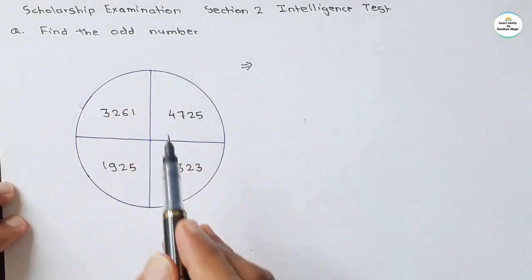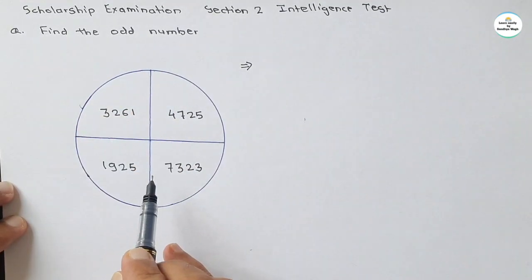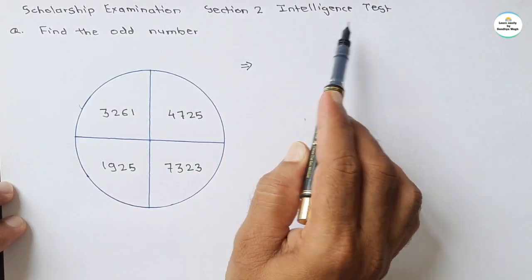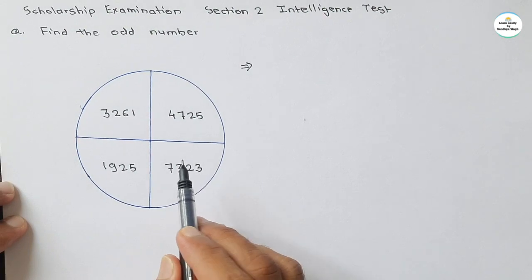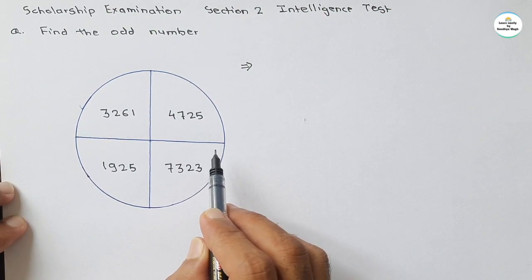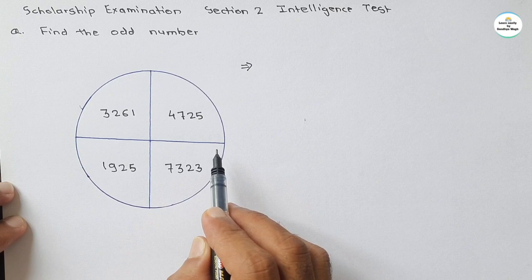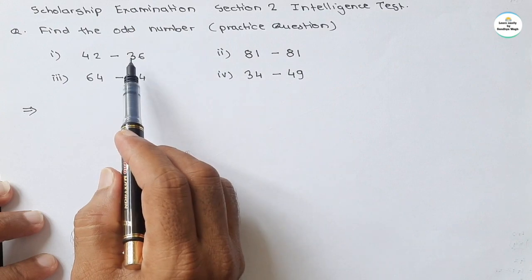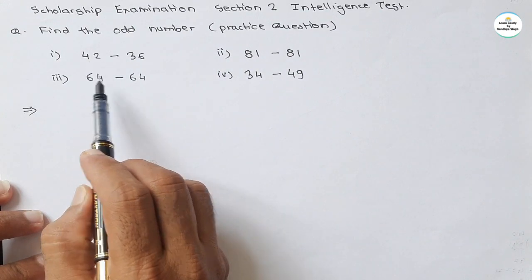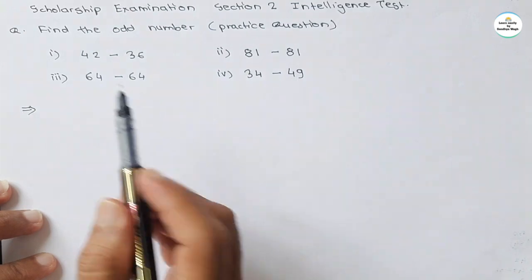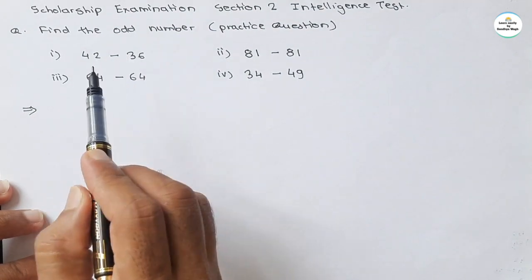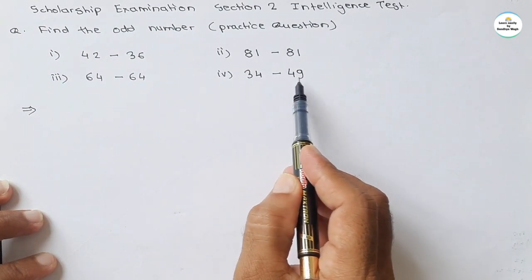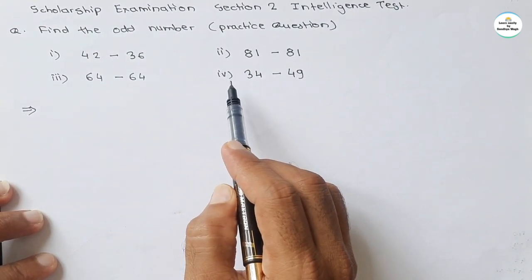See the question: find the odd number. Four numbers are given in a circle and one number is odd. This question is under scholarship examination, section 2, intelligent test. Before starting the solution of this question, let's see the solution of the practice question given in the previous video. Four sets of numbers were given and one is the odd pair: first is 42-36, second is 81-81, third is 64-64, and fourth is 34-49.